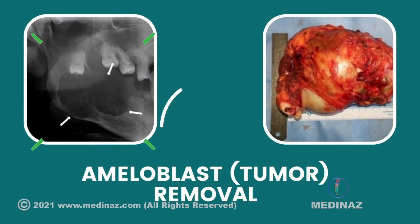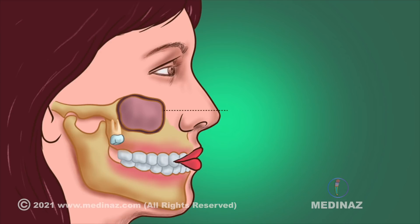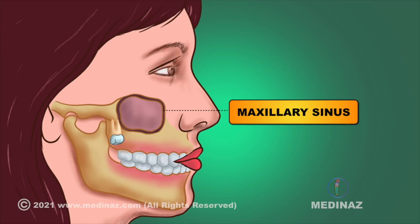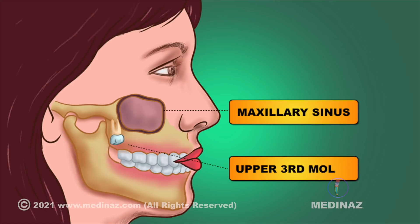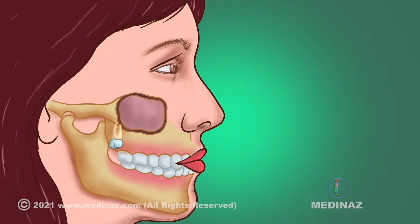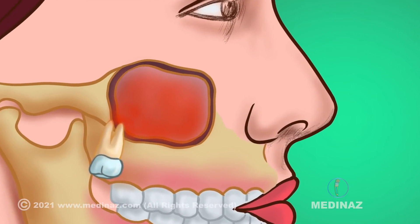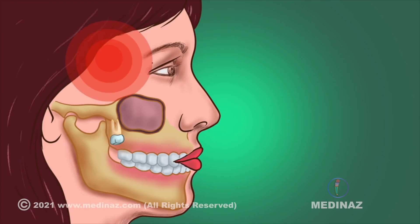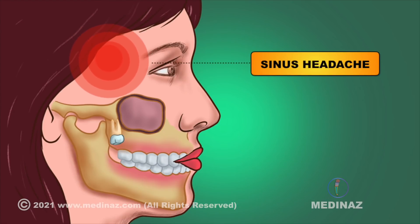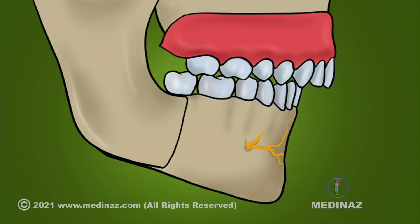The next important cause is sinus infection. The wisdom teeth in the upper jaw are in close proximity to the sinuses located under the cheekbones. When they start to grow, the roots and the teeth may place pressure on this area, which can in some cases lead to sinus headaches or even sinus infections. In that situation, it is better to get the wisdom tooth removed.